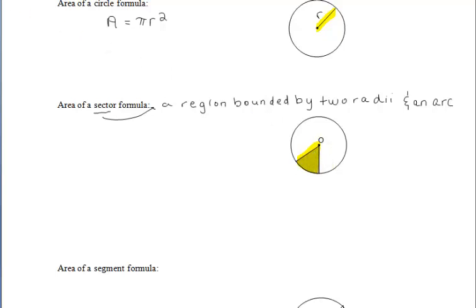Just as the length of an arc is a fractional piece of the circumference of a circle, the area of a sector is a fractional part of the area of the circle. So the area of a sector is equal to the area of the circle times the fractional part of the circle determined by the sector's arc.